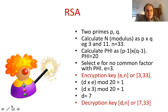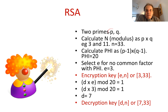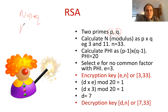The RSA method starts with two prime numbers P and Q. We calculate N, where N equals P times Q. After that we calculate Phi, where Phi equals (P minus 1) times (Q minus 1). So if P is 3 and Q is 11, we get N equals 33 and Phi equals 20.